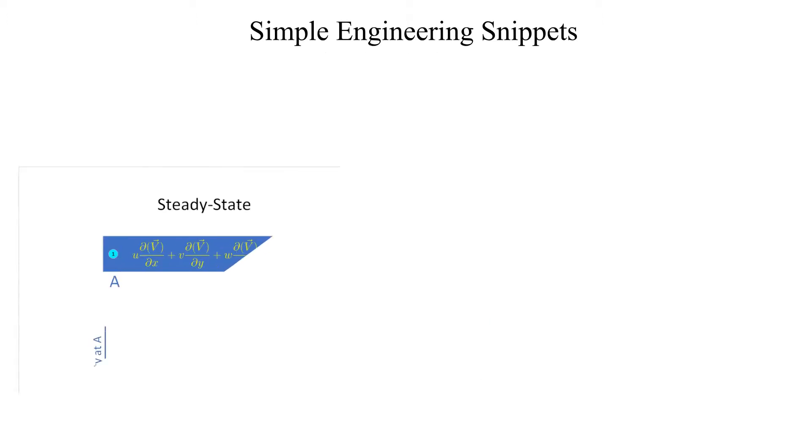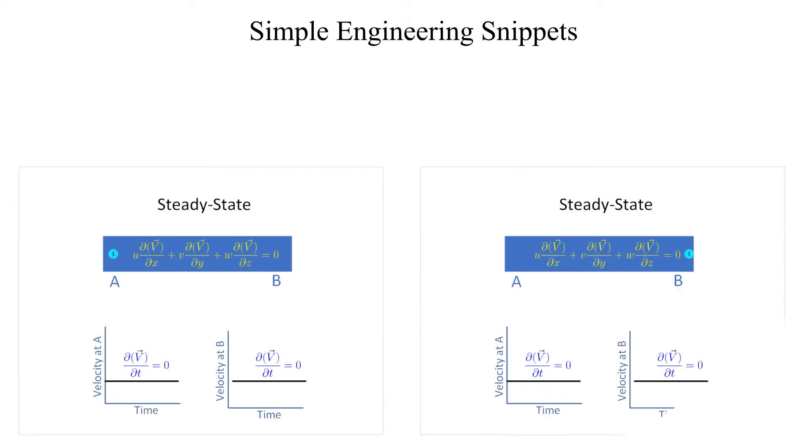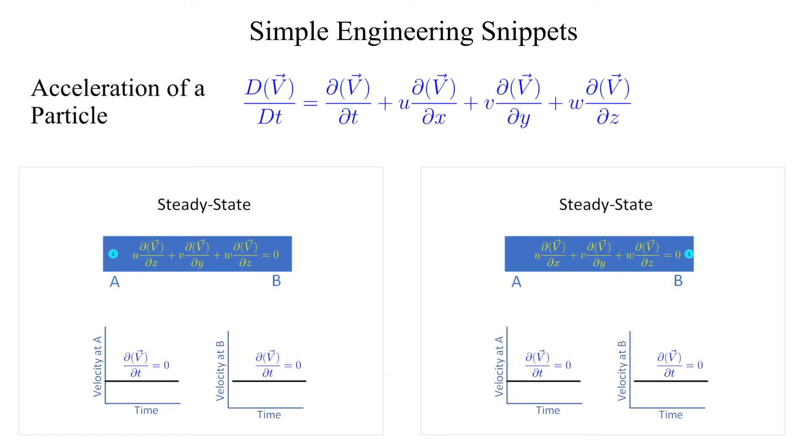Let's use the material derivative to determine the acceleration of a particle in a flow field. Consider a fully developed incompressible steady state flow through a straight pipe. Since it is steady state, the local time derivative is zero. It is a straight pipe so the continuity equation tells us that the partial derivative of the velocity with respect to x is zero.